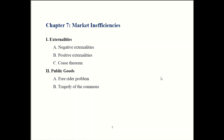Public goods are the other way the market can be inefficient, and one issue that arises is the free rider problem. You're probably familiar with this from group projects — there's always one person who never does any work but gets the same credit. That's the free rider problem. There's also the tragedy of the commons, where a common resource can be depleted because no one has the incentive to conserve it.